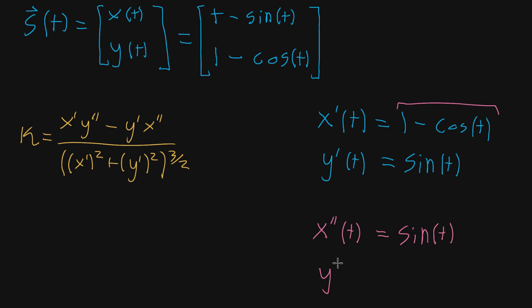And then y double prime is just the derivative of sine here. So that's just gonna be cosine, cosine of t.